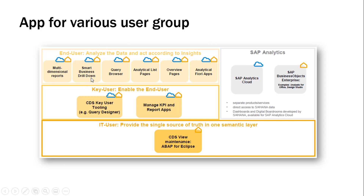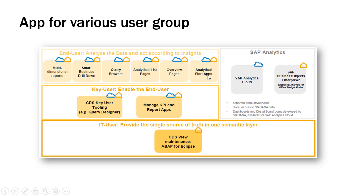Then we have Smart Business drill-downs — these are KPI-driven reports. Query Browser is available where users can query all available options and see the report. Analytical list pages are less technical. Overview pages — end users with help of basis can directly get an overview page from the SAP Fiori library. Analytical Fiori apps are Fiori apps which a Fiori developer creates, but there are also ready-made apps available.